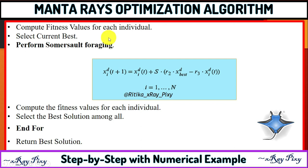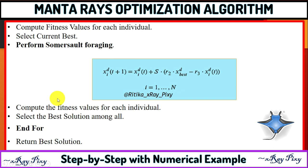After that, we perform somersault foraging using this mathematical model for each agent. Here i runs from 1 to N, that is 1 to 3. Use a for loop where for i = 1 to 3, update the position of each search agent using this equation, then check the boundary to ensure all solutions are within the bound.